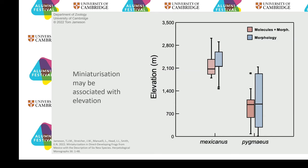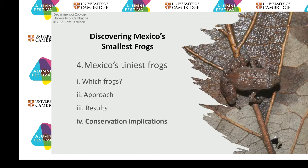What are the other implications of describing new species of frog? With my conservation hat on, one of the really important things about discovering new species is figuring out what this means for their conservation. We can't protect a species if we don't know it's there in the first place. But if we can identify that a new species is there, we can look at what threats it might face and try to make sure it doesn't go extinct just as soon as we find it.